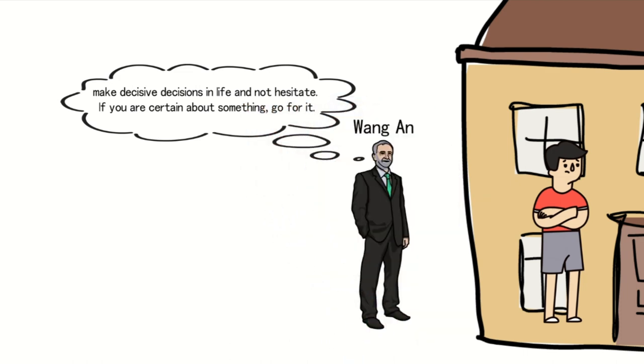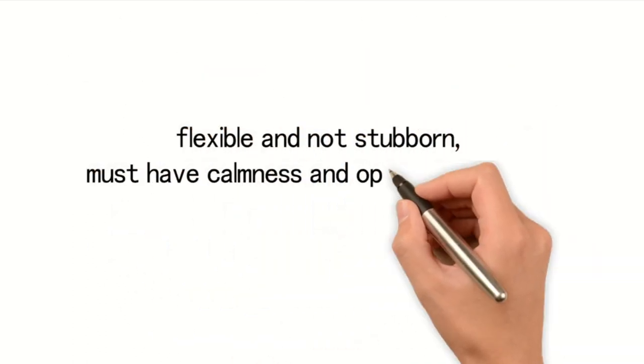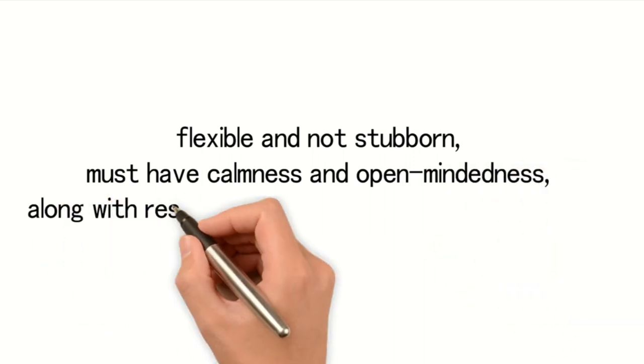In summary, the fifth danger according to Sun Tzu's teachings teach us to be flexible and not stubborn, must have calmness and open-mindedness, along with resolute determination and clear judgment.